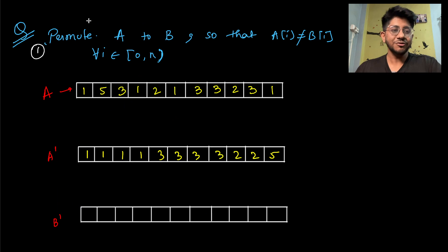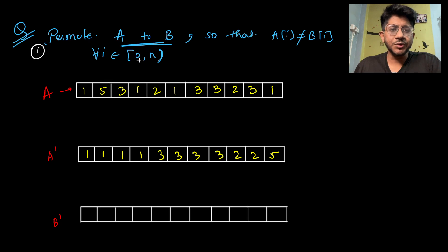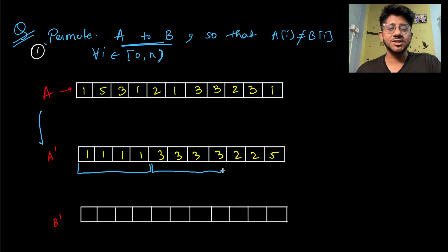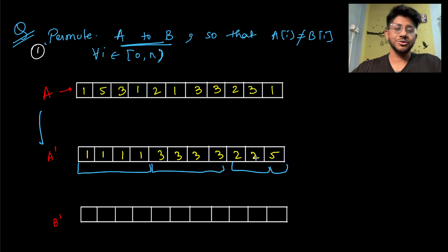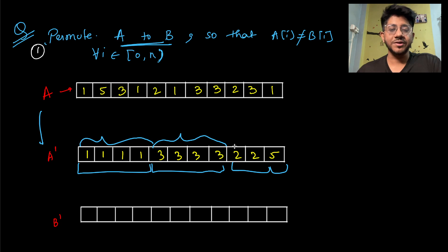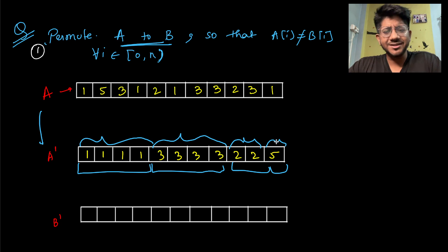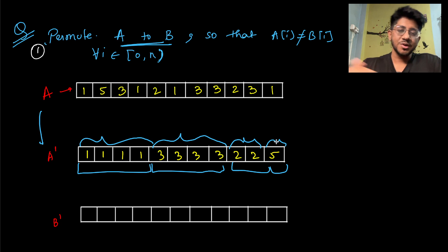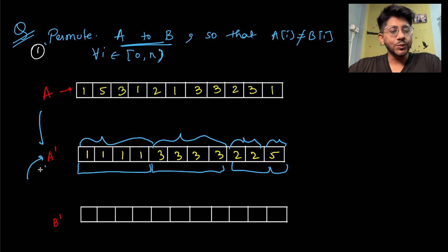For simplicity, to understand things step by step, think about it this way: we are going to permute A to B. What if A was already sorted by frequency — all fours come first, then threes, then twos, then ones and fives? So all elements are sorted by their frequencies, with the most frequent elements first, then second most frequent, and so on. From this particular array, how would you generate a new array such that it's a derangement?